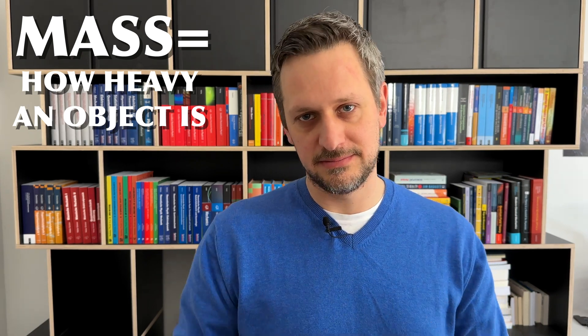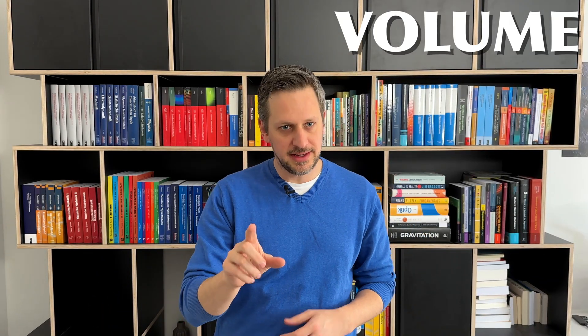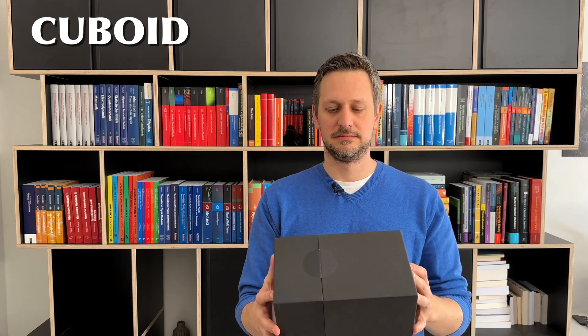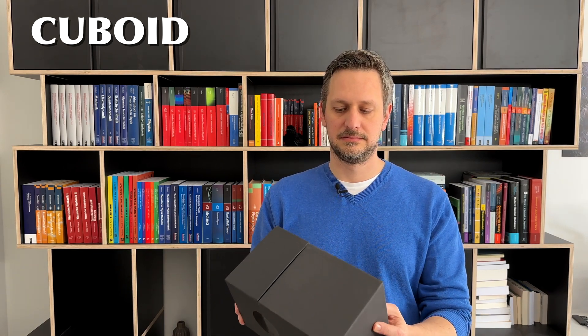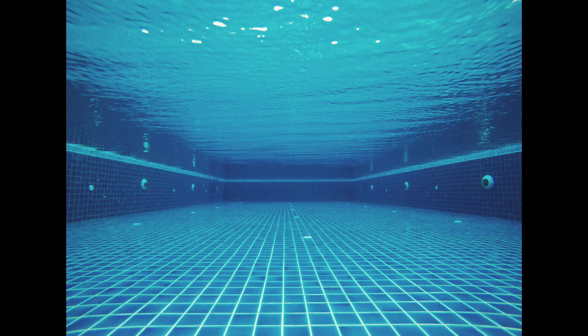Volume — how large something is. What is volume? Not the sound thing, but the space thing. Let's start with a very simple form: a cuboid. That's essentially the same as a cube, but not all the sides have to have the same length. Mathematically, its volume is defined as length times width times height. This calculates how large the cuboid is, or equivalently, how much space is inside it — for example, how much air is in an empty room or how much water is in a pool.